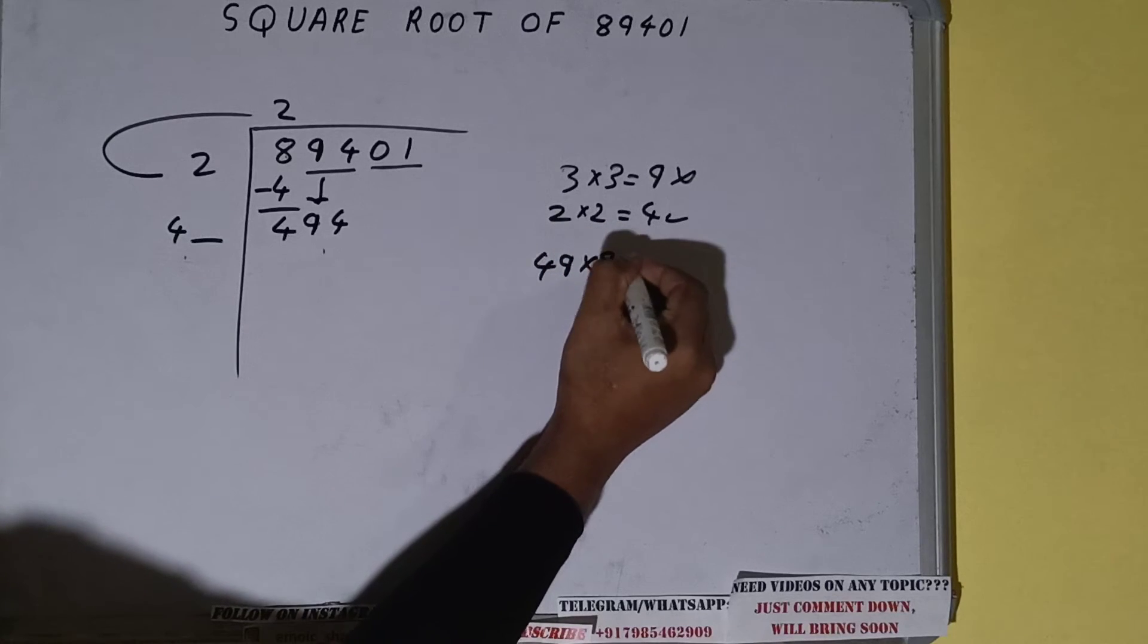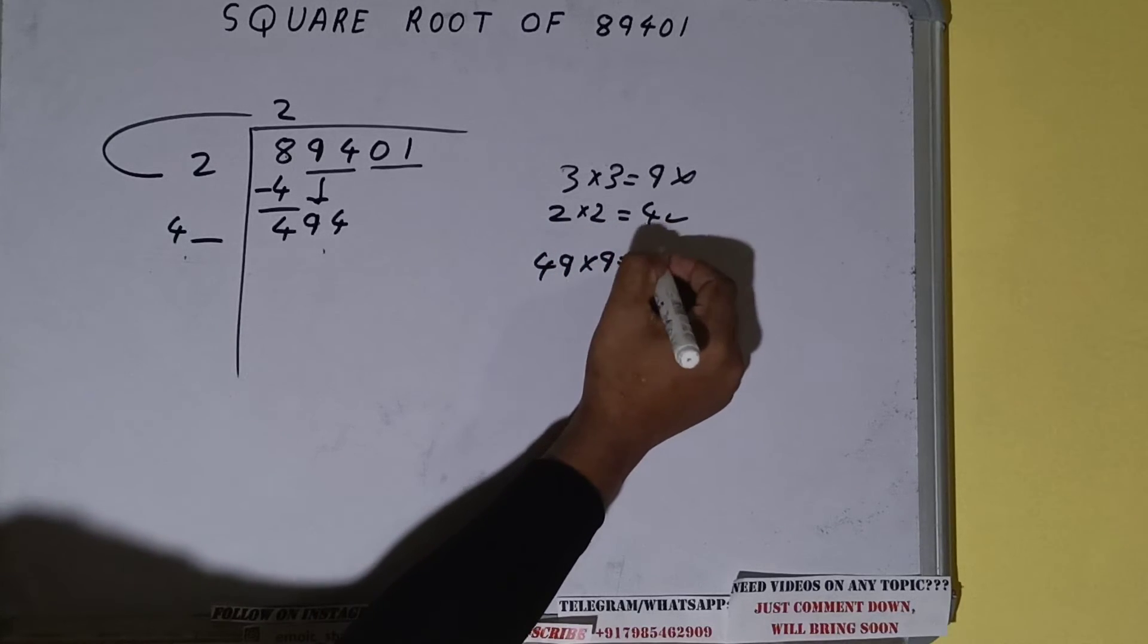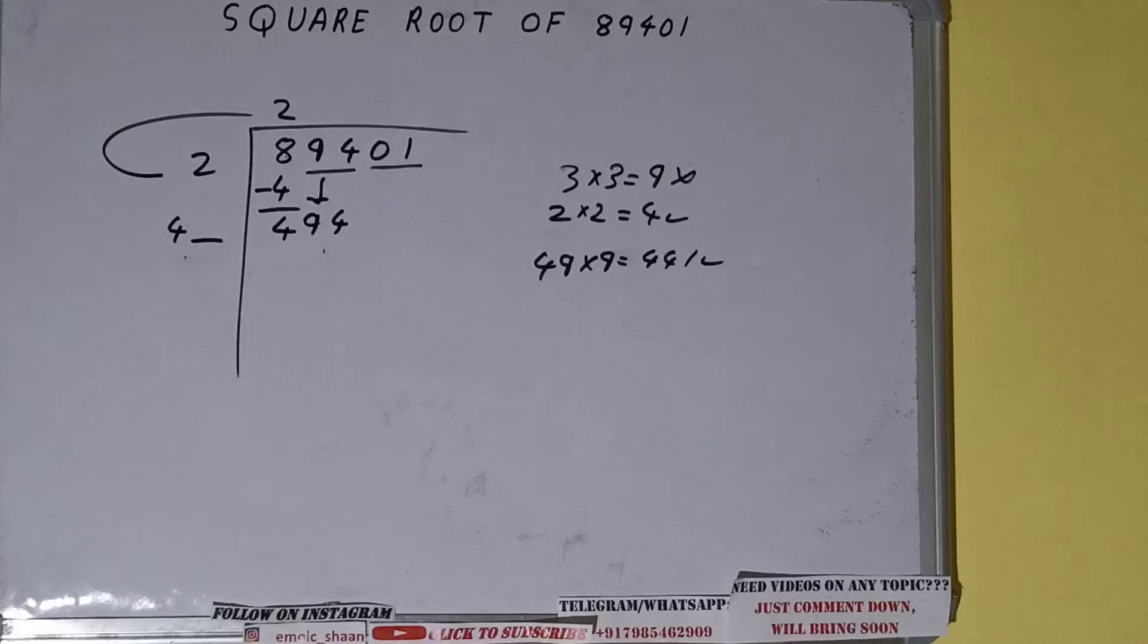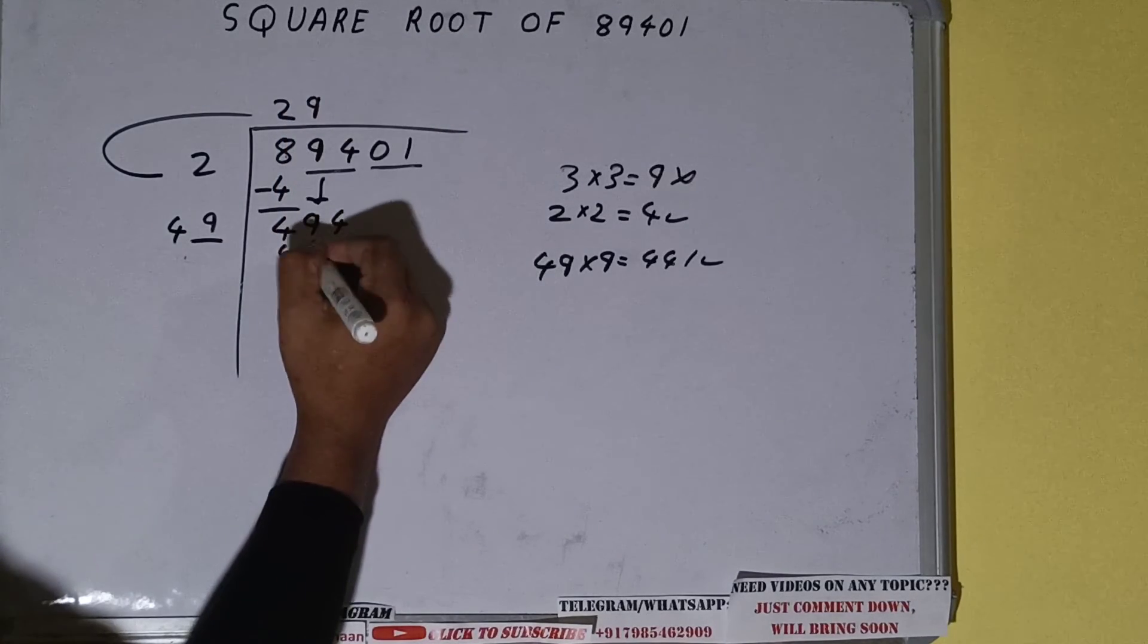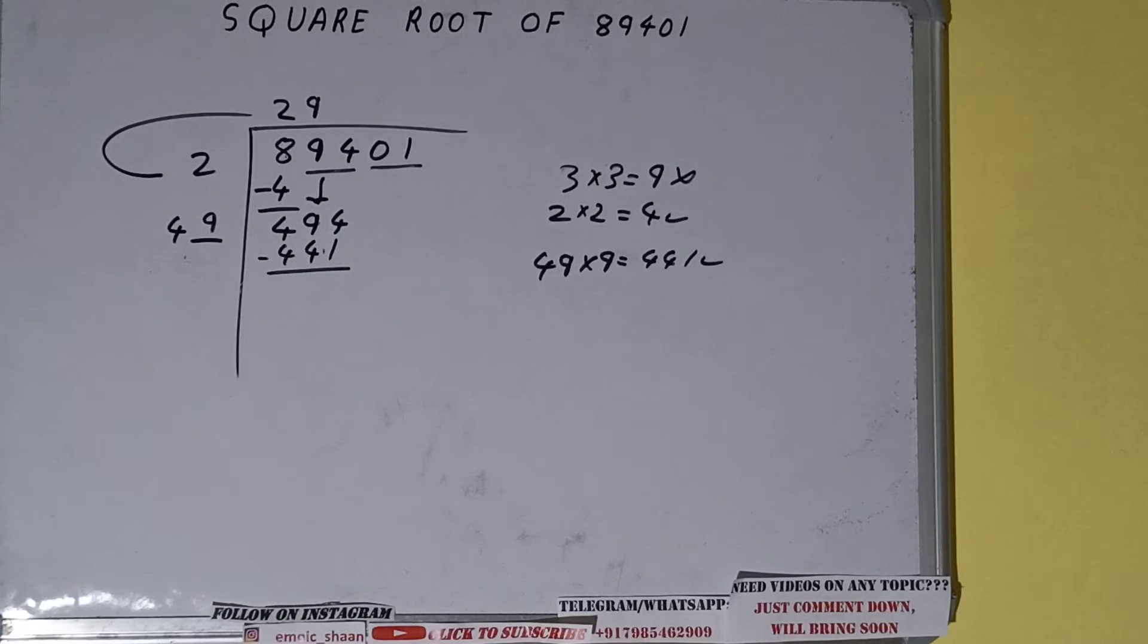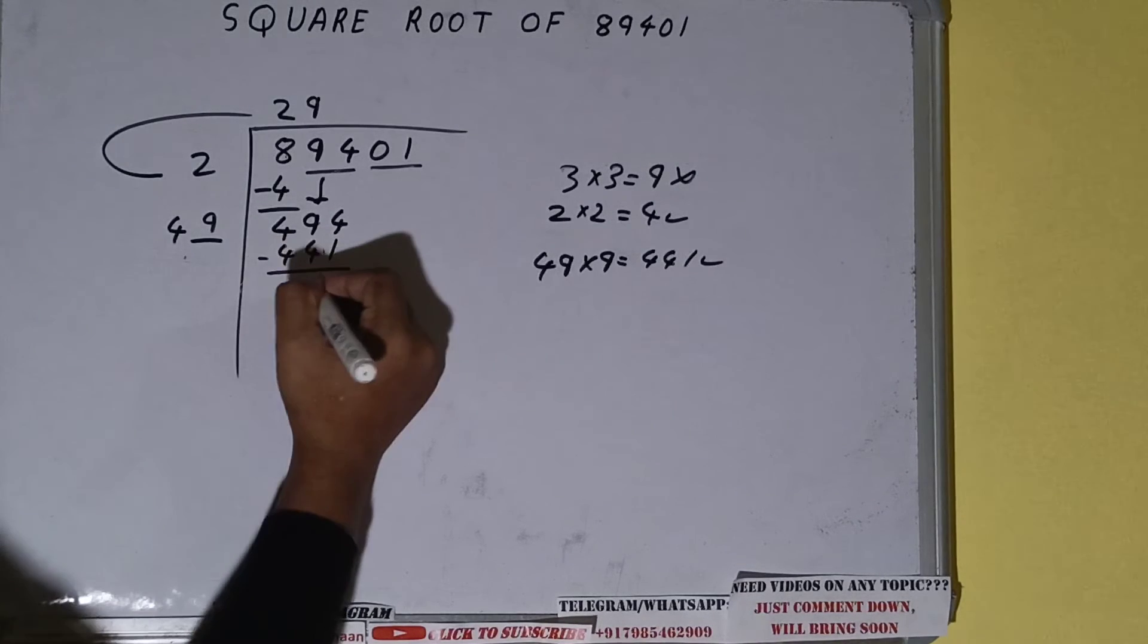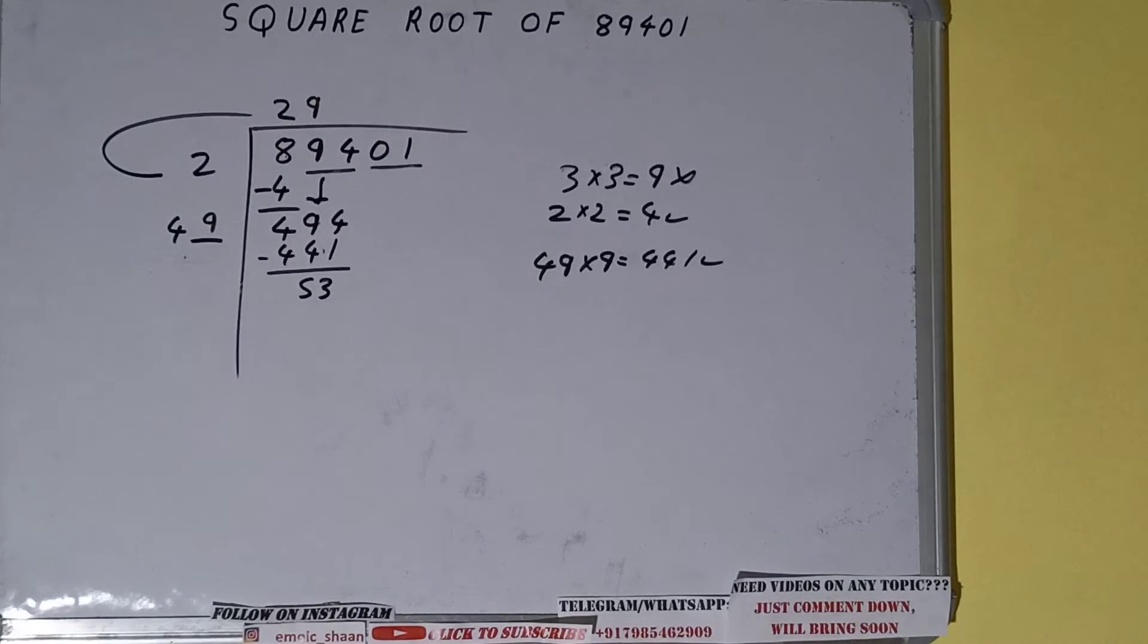So 49 into 9 we can try. It will be 441 which is good to take. So 9 here and 9 here. 441 subtract it, and we'll be getting 53. Now 49 into 9 we did, so add both. So 49 plus 9 will be 58.